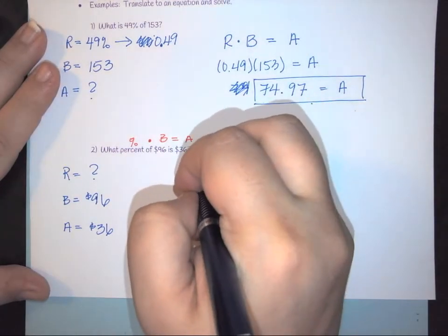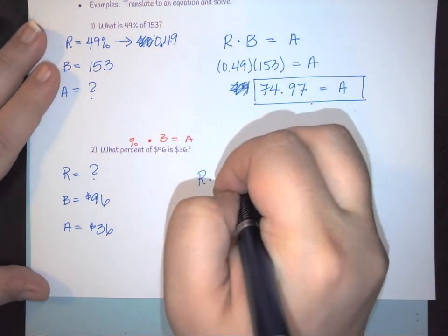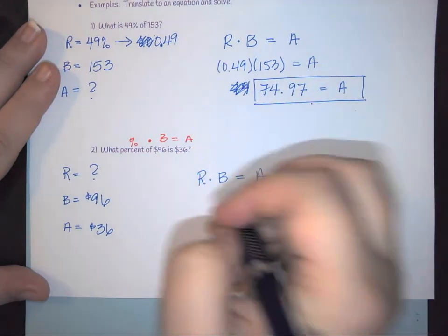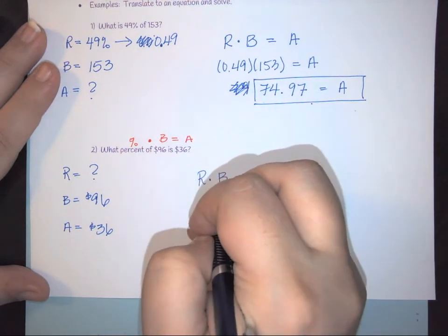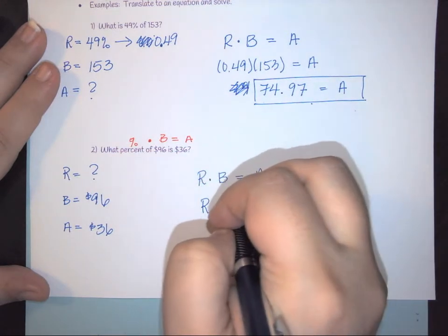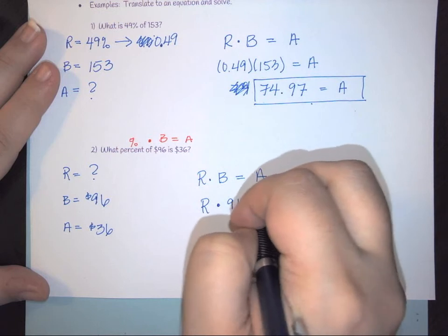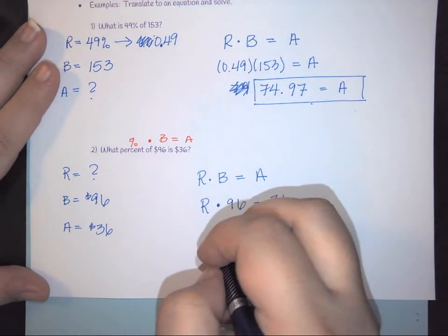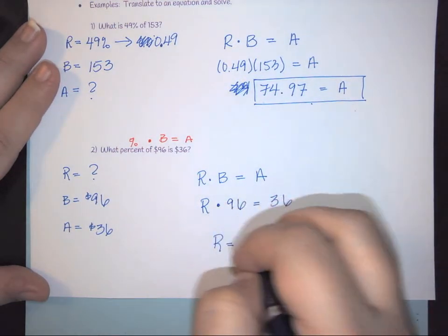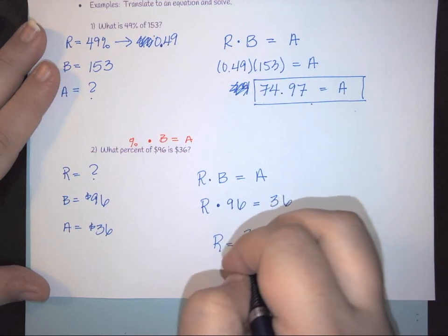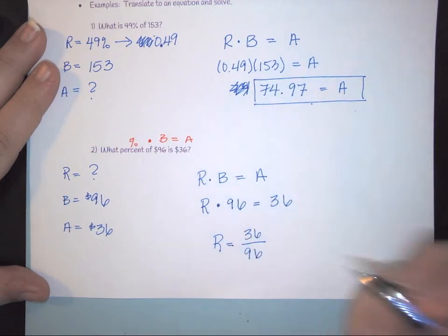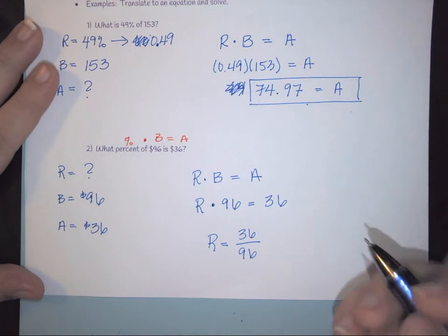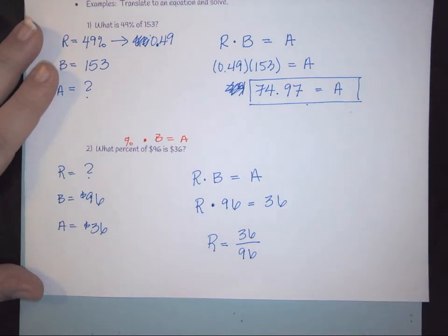So again, R times B gives you the A term. So my rate times 96 is equal to 36. So my rate is going to be 36 divided by 96. And in this case, we would do the division.